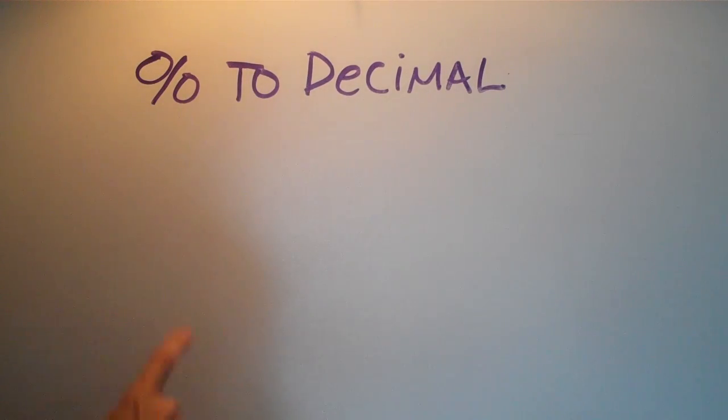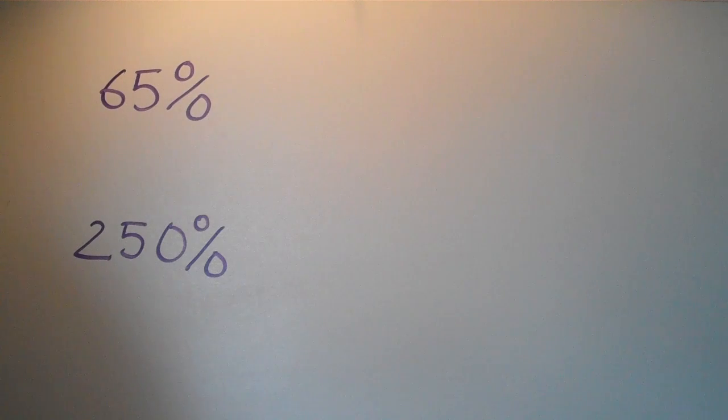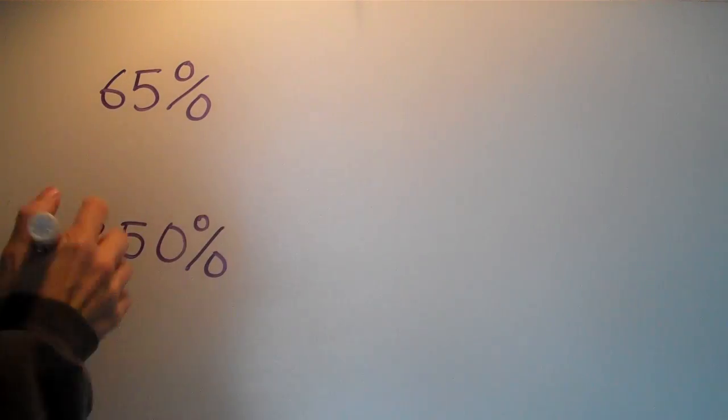Okay, in this video we're going to talk about how to go from a percent to a decimal. We have two simple examples. First of all, 65% - what does that really mean? Well, percent really means per 100.